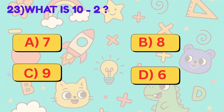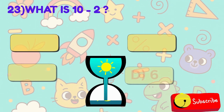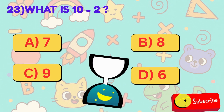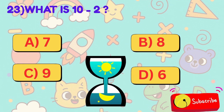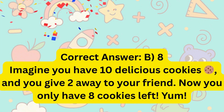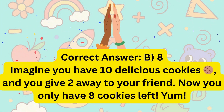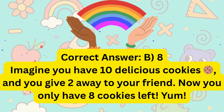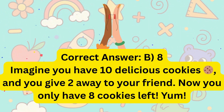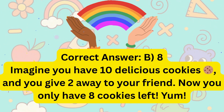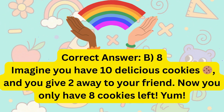23. What is 10 minus 2? Is it A, 7, B, 8, C, 9, or D, 6? Correct answer is B, 8. Imagine you have 10 delicious cookies and you give 2 to your friend. Now you only have 8 cookies left. Yum!